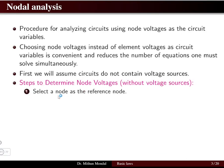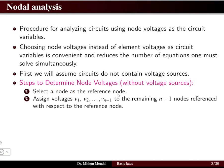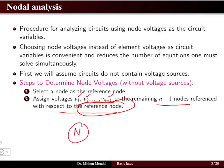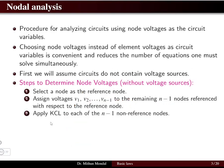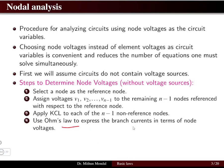The first step in nodal analysis is to select a node as the reference node. Then assign voltages v1, v2, ..., vn-1 to the remaining n-1 nodes with respect to the reference node. Next, apply KCL to each of the n-1 nodes — the algebraic sum of currents at a node equals zero, meaning current entering equals current leaving.